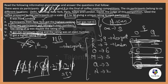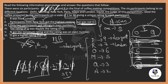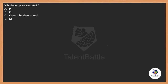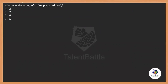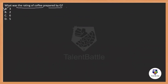The arrangement is complete. The major focus in this question was arranging O and Q — once that was done, everything else followed. Now for the questions: the second highest rating given was 7 (R), the first being 9 (P). The participant from New York is P. The rating of coffee prepared by Q is 3 — option A.